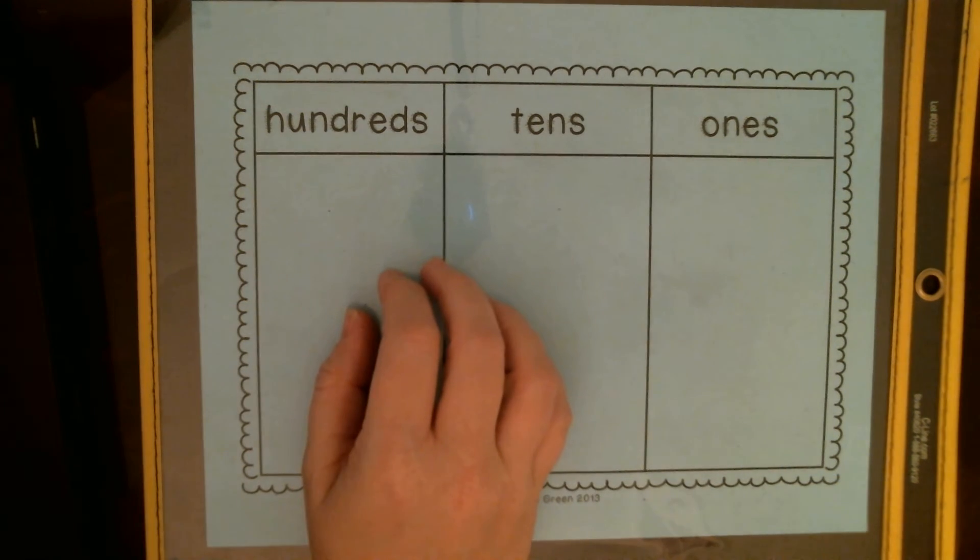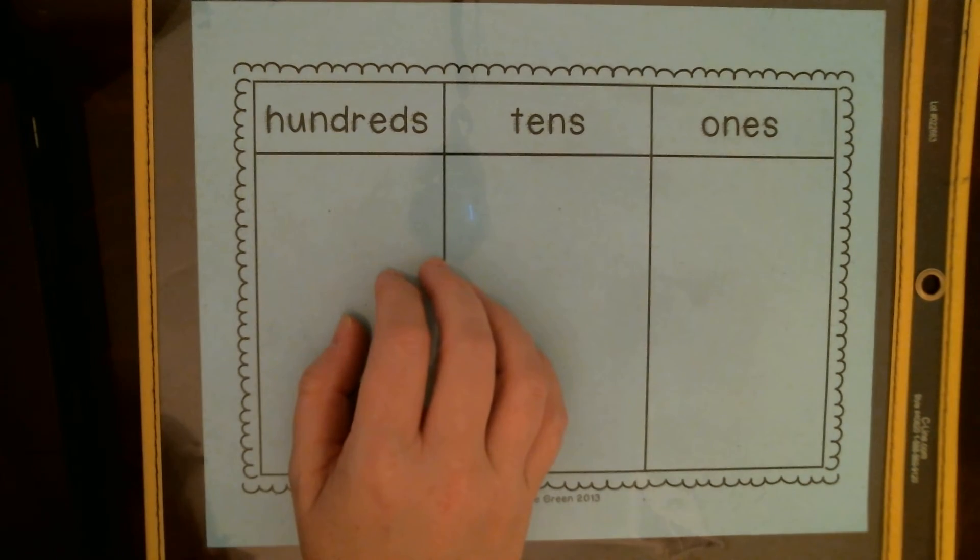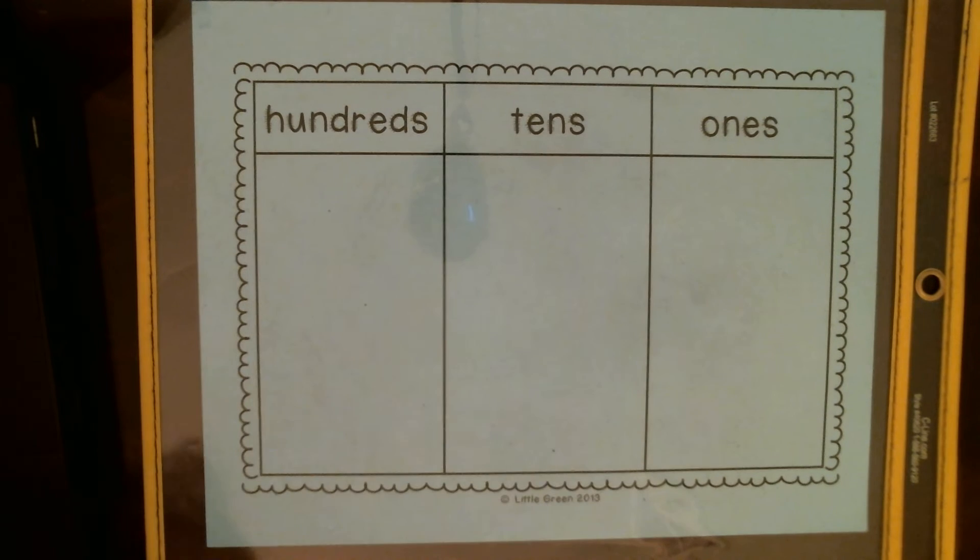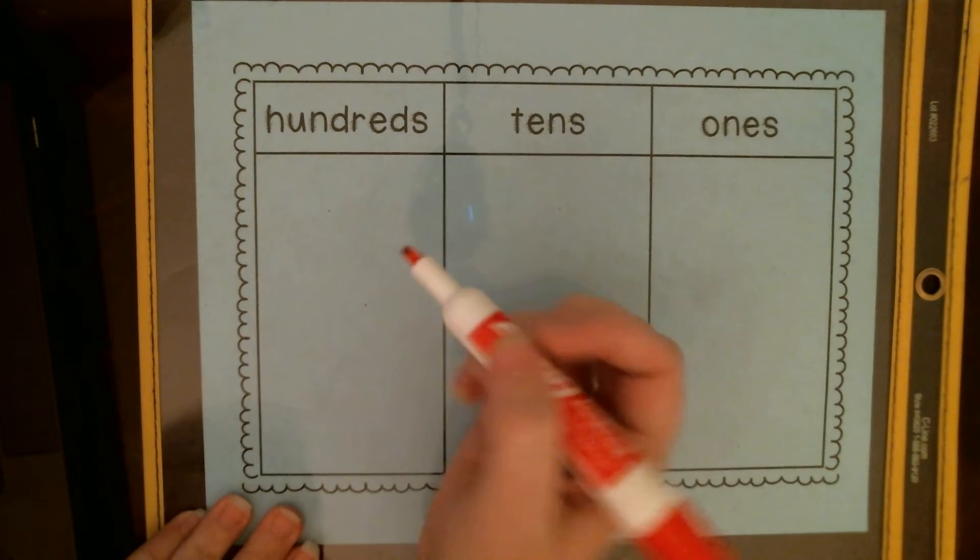Hey guys, so today we're going to be working in our math book on lesson 7-3, and we're going to talk about the different values of a number depending on where it is on a place value chart or in a number.